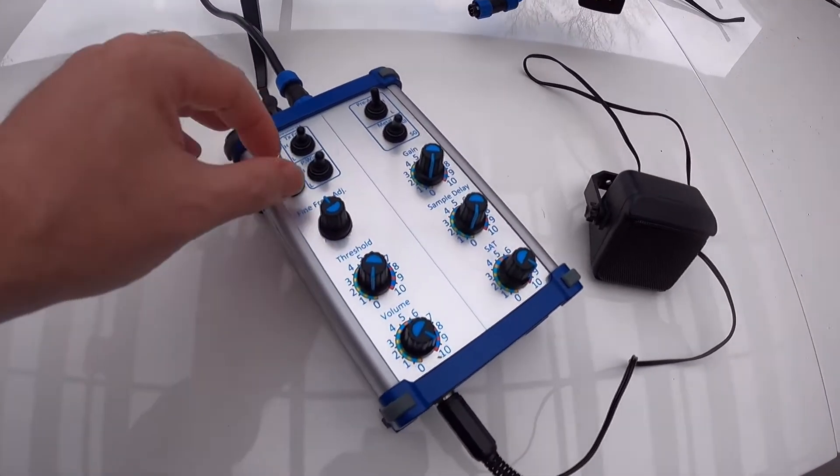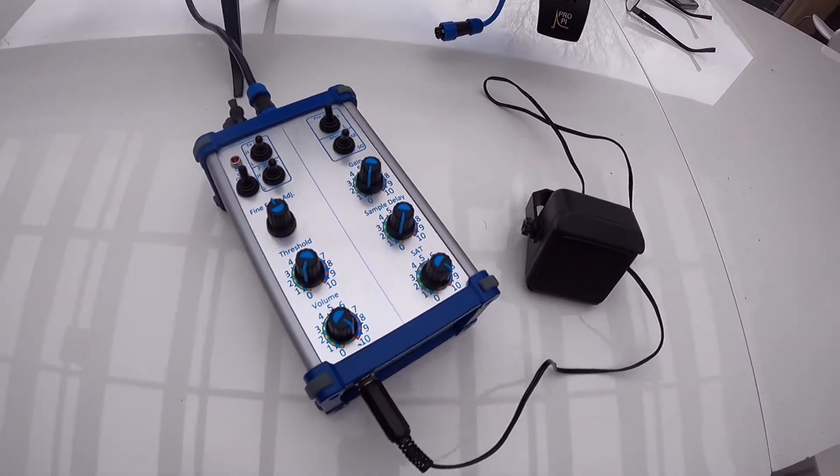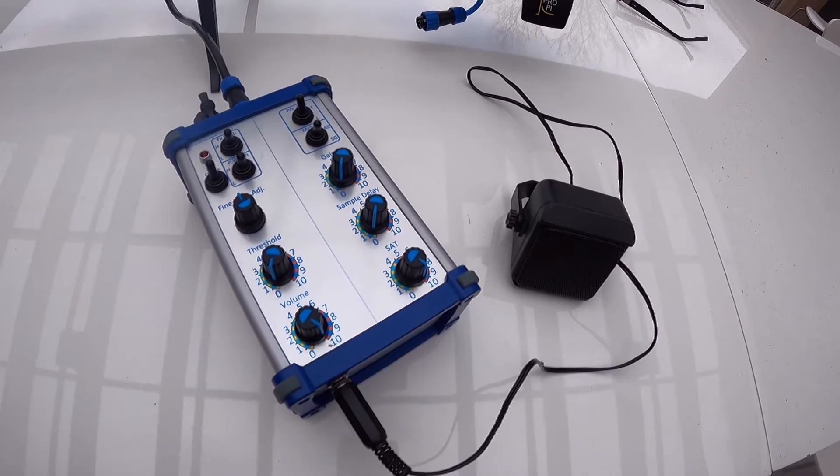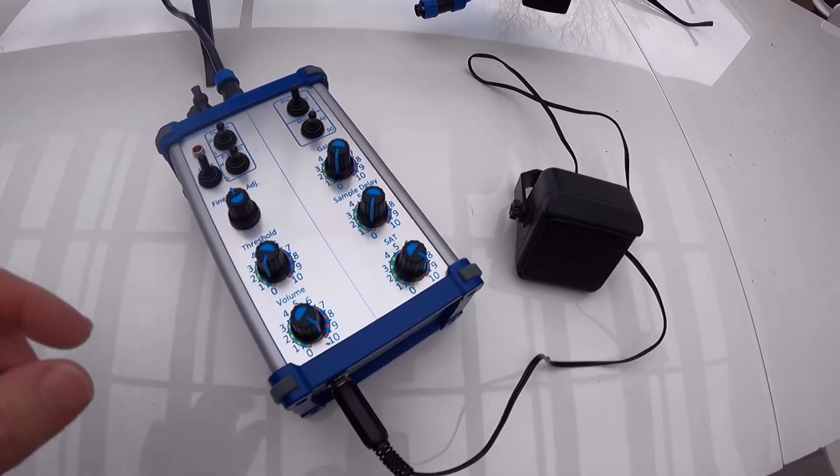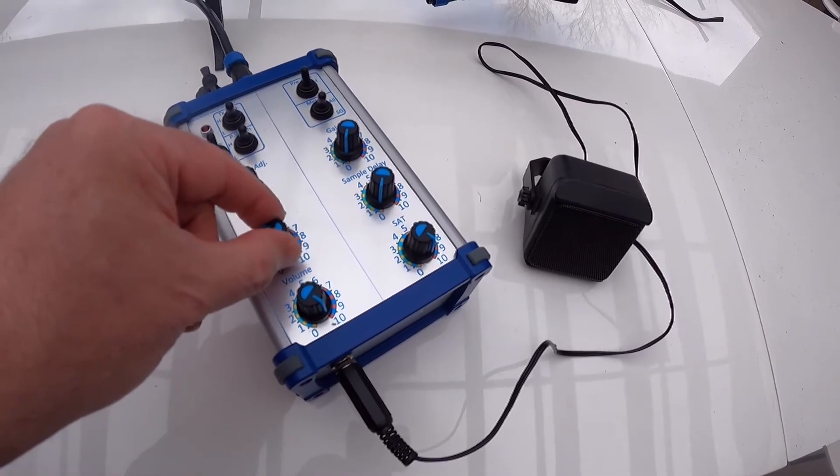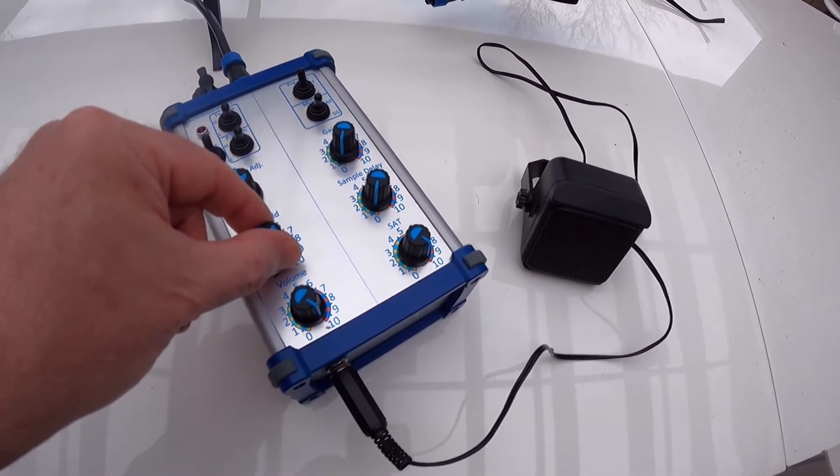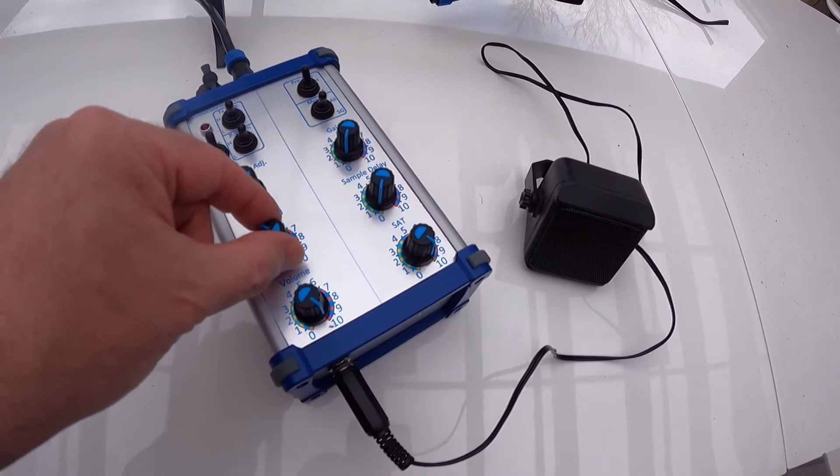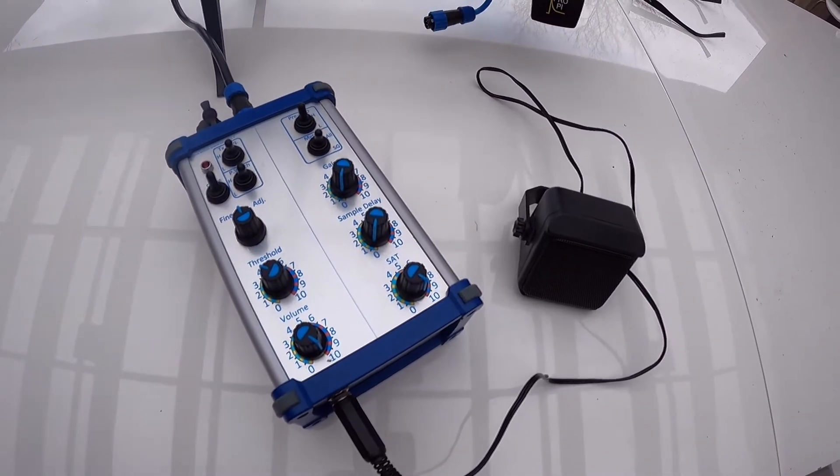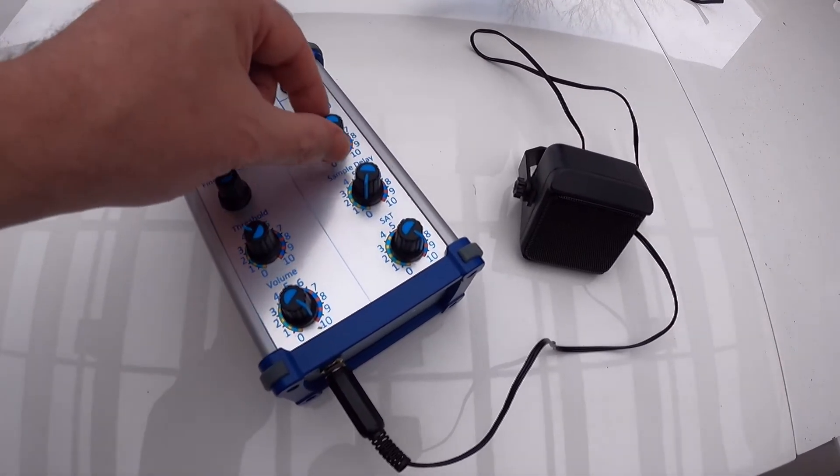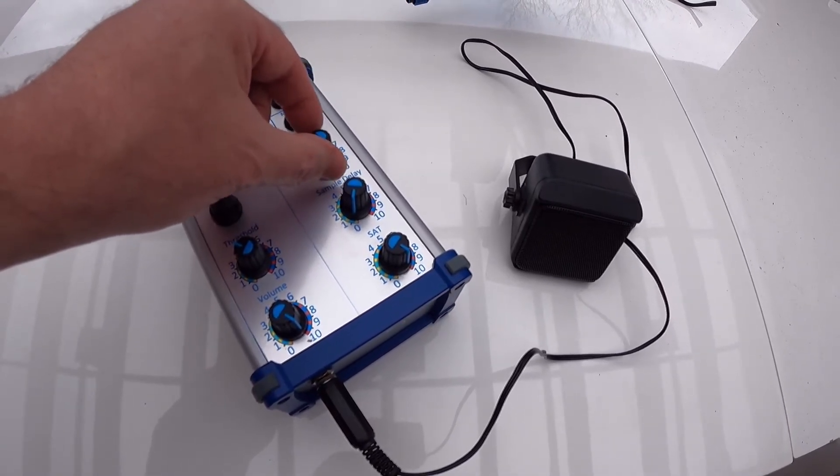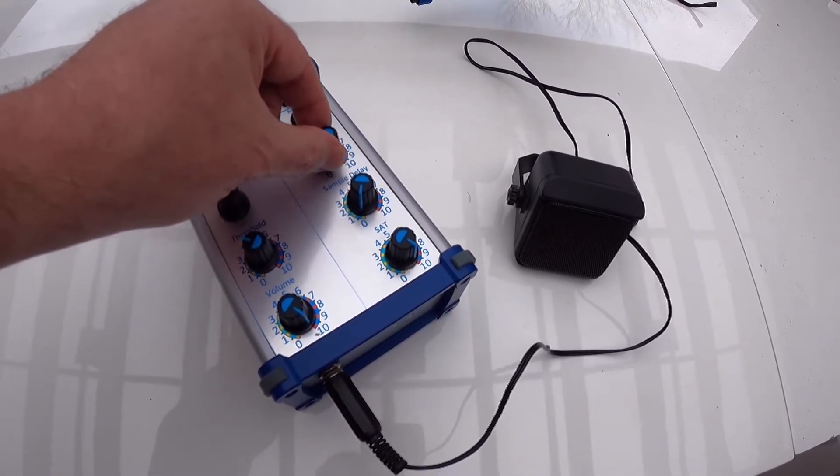Now the key to setting it up is a three-stage process. The first thing you need to do is adjust the threshold control until you get a tone, and then when you get a tone, wind it back a bit so you can't really hear it. Then the next thing to do is adjust the gain control so that you can just hear some sound. I'll turn it up a little bit louder so you can hear it.